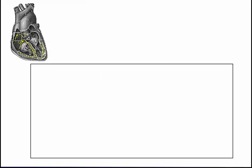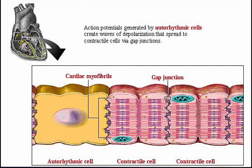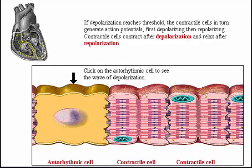In this magnified view of the heart, we see an auto-rhythmic cell adjacent to several cardiac contractile cells. Action potentials generated by auto-rhythmic cells create waves of depolarization. If depolarization reaches threshold, the contractile cells in turn generate action potentials, first depolarizing, then repolarizing. After depolarization, the cardiac myofibrils in contractile cells slide over each other, resulting in muscle contraction. After repolarization, these cells relax. Click the auto-rhythmic cell to see the spread of depolarization and its effect on contractile cells.